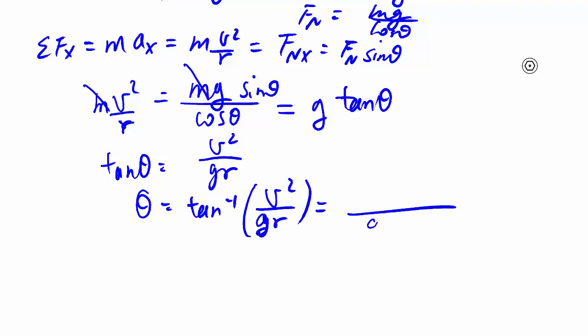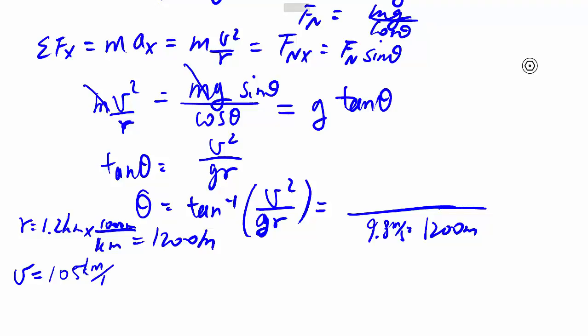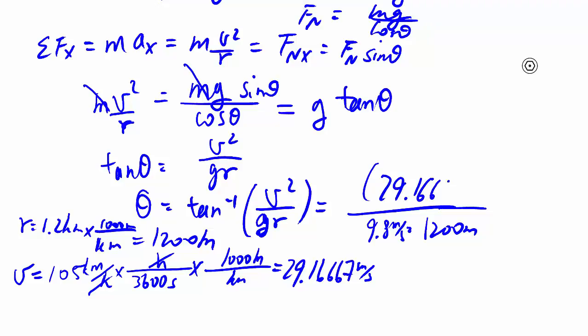g we already took care of the direction so it's just a magnitude of g. r is my 1.2 kilometers, so let's do a quick conversion here: times 1000 meters per kilometer. The velocity they give to us, or the speed rather, is given in kilometers an hour, so we have to do that handy conversion to give us 29.1666 repeating meters per second.